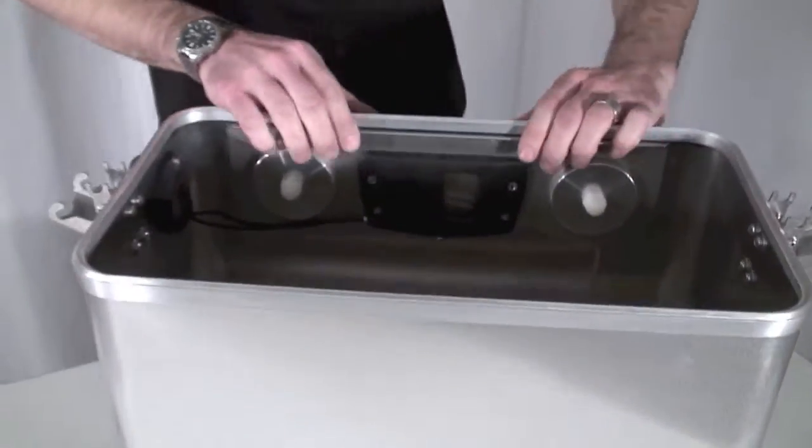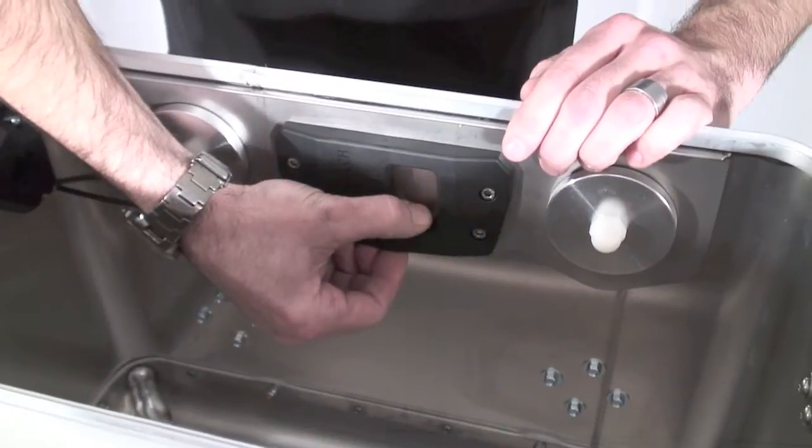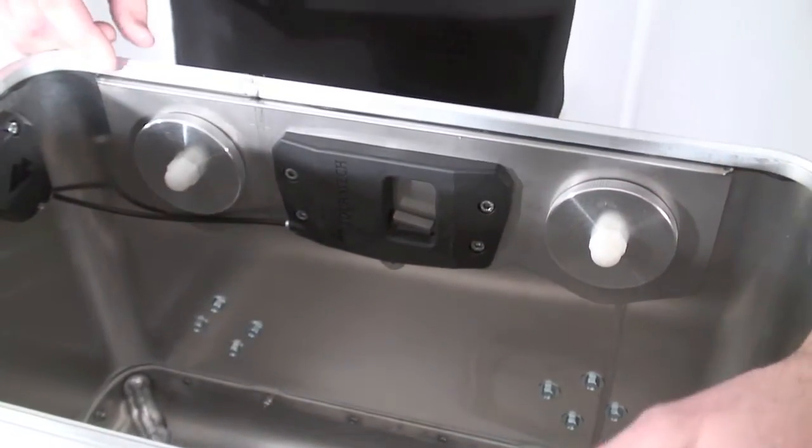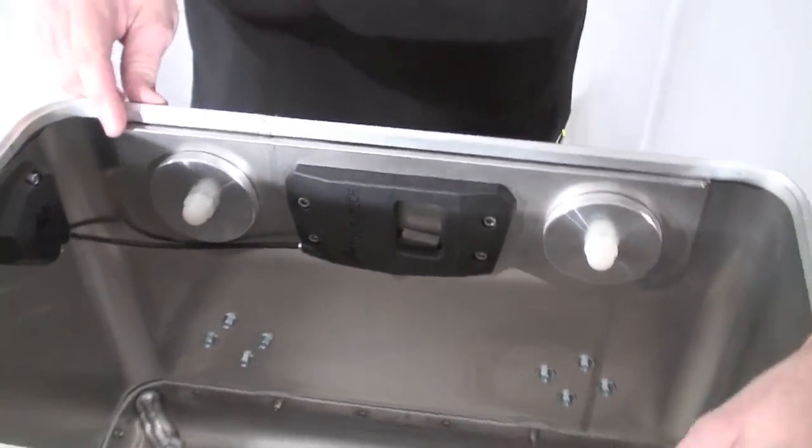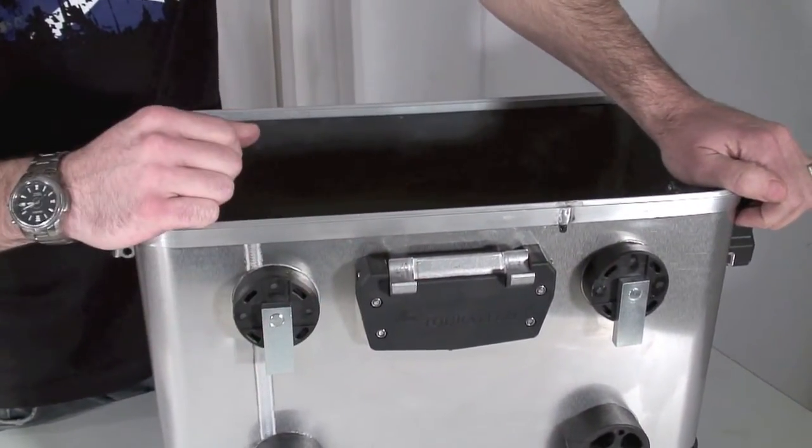Alternatively, you can use the release lever inside the pannier. You can check that the system's been released by making sure that the latch is in an outward facing position.